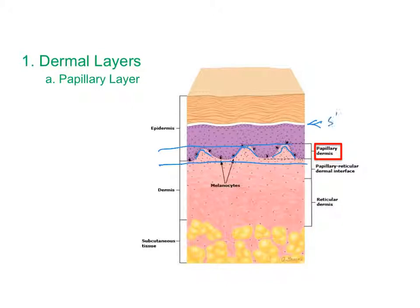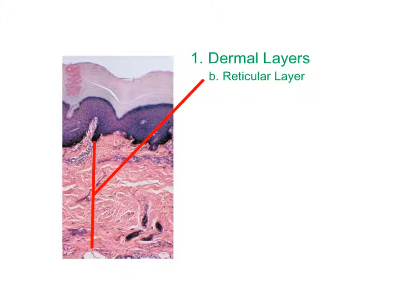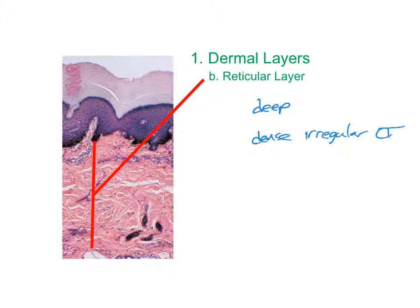You can see the stratum lucidum in this image, which tells us we're looking at thick skin. The deeper layer is the reticular layer, composed of dense irregular connective tissue — densely packed collagen fiber bundles crisscrossing in multiple directions.